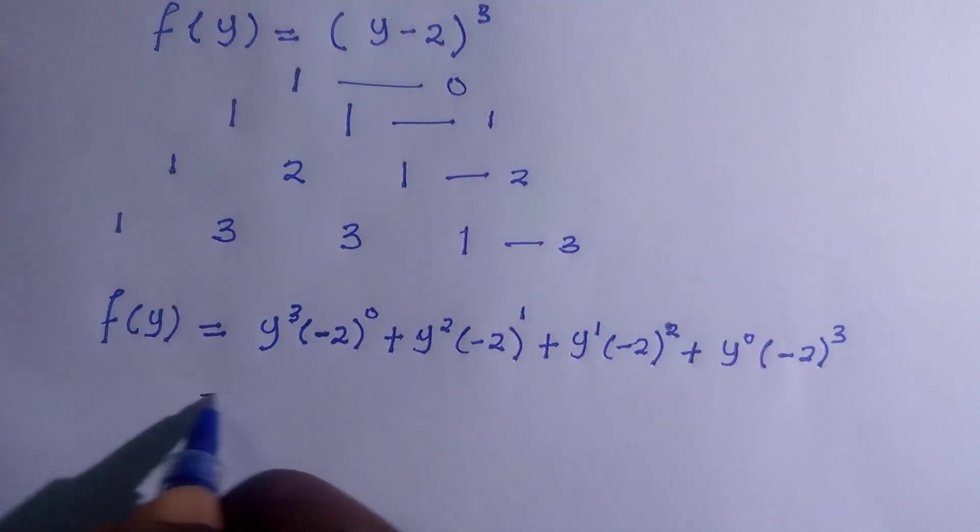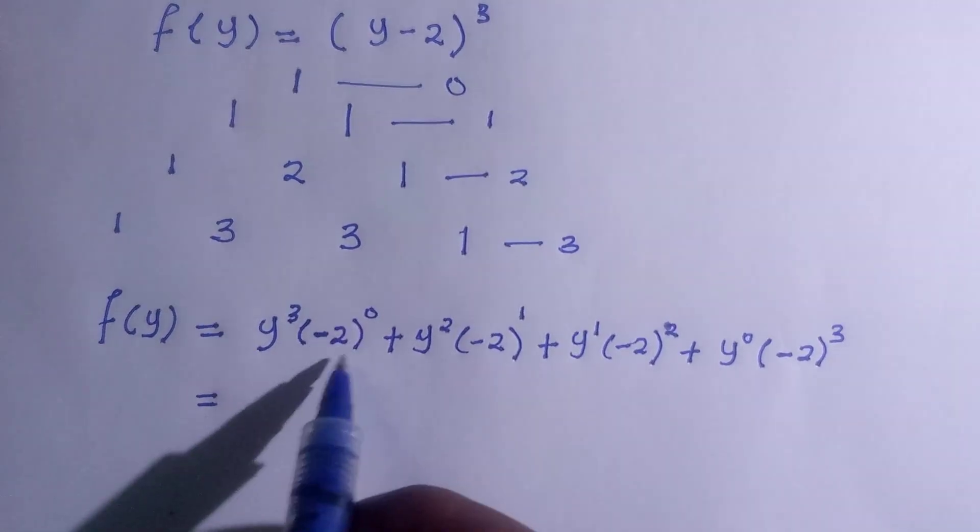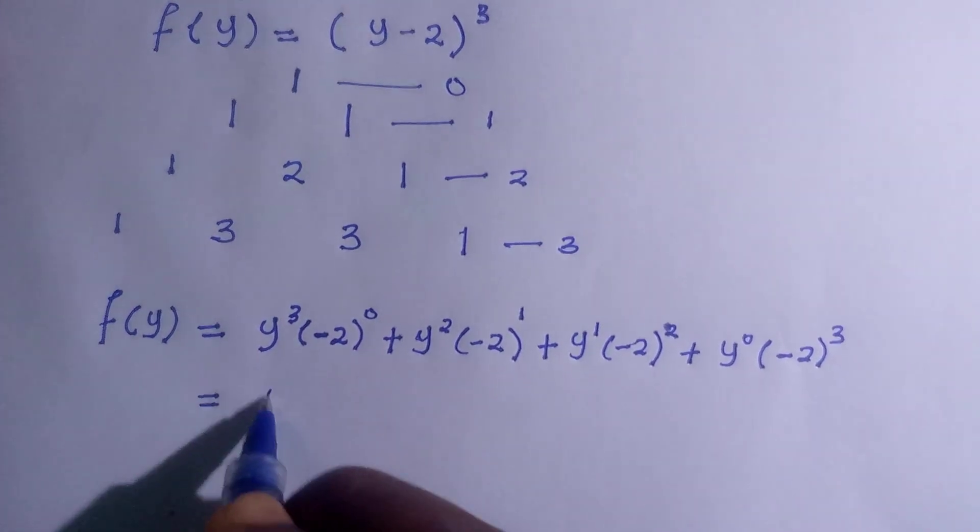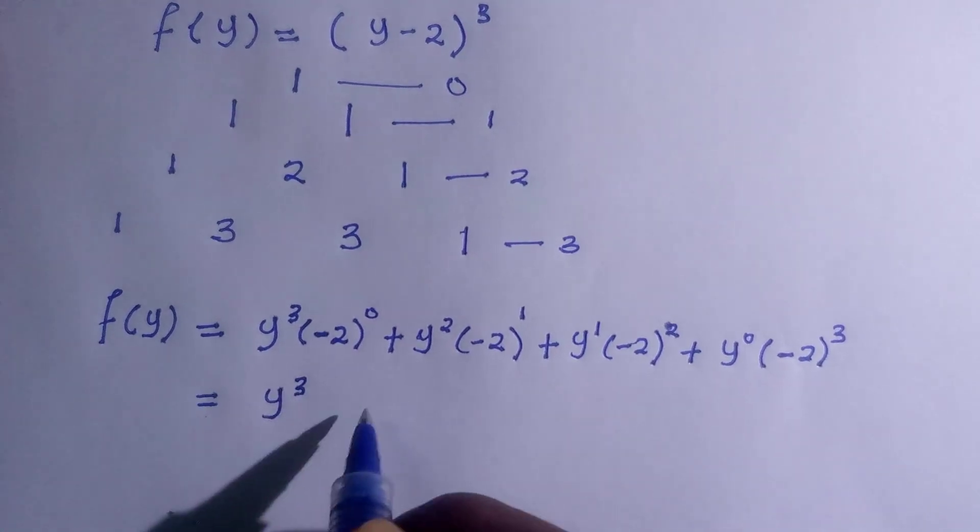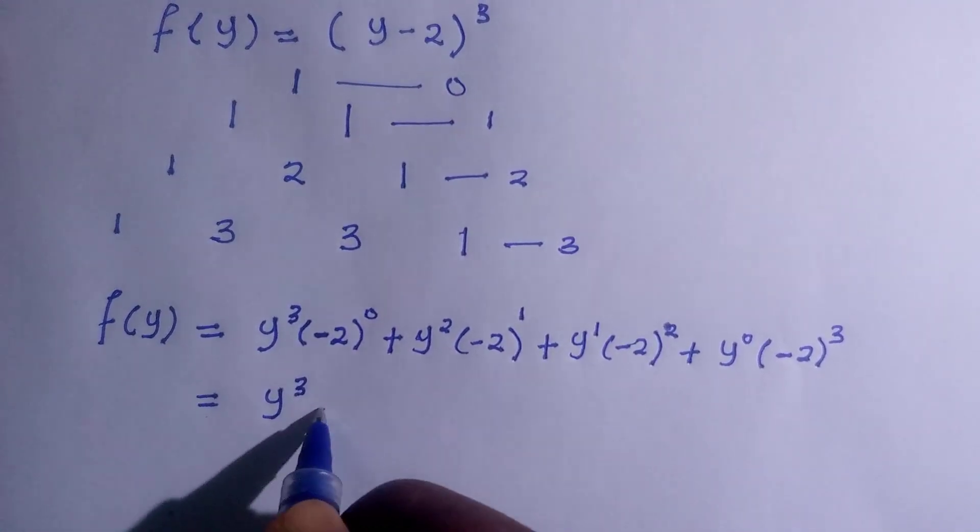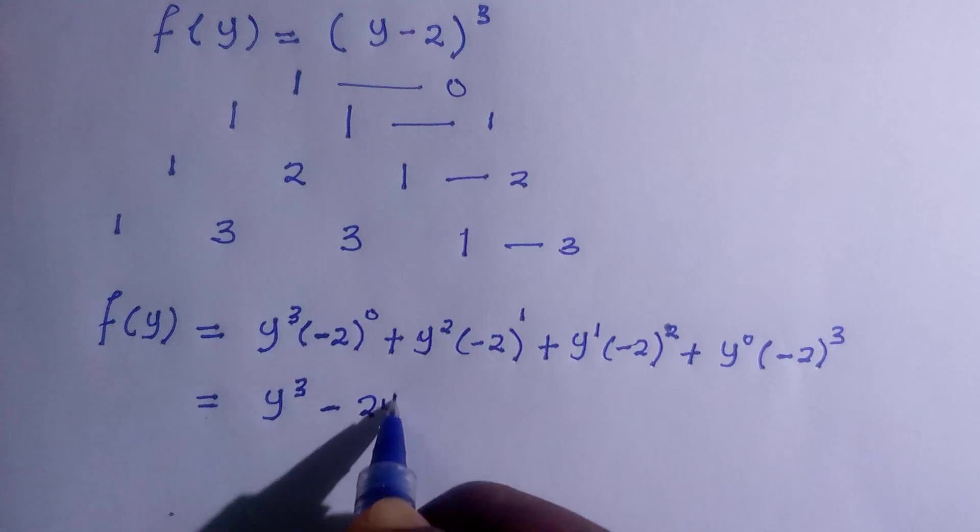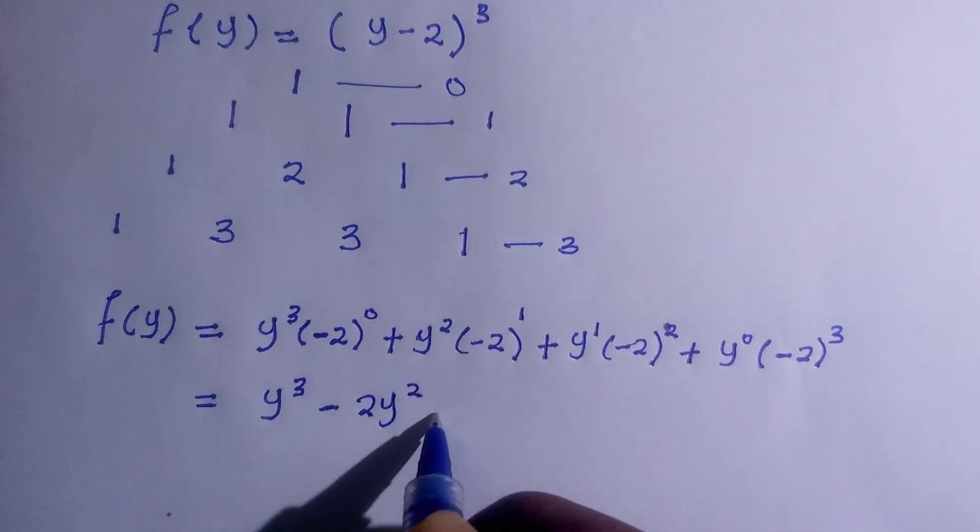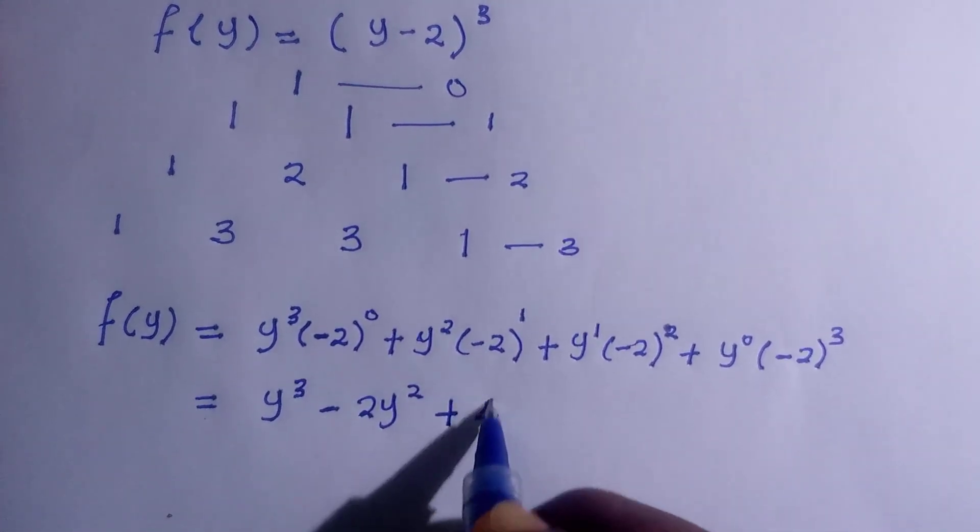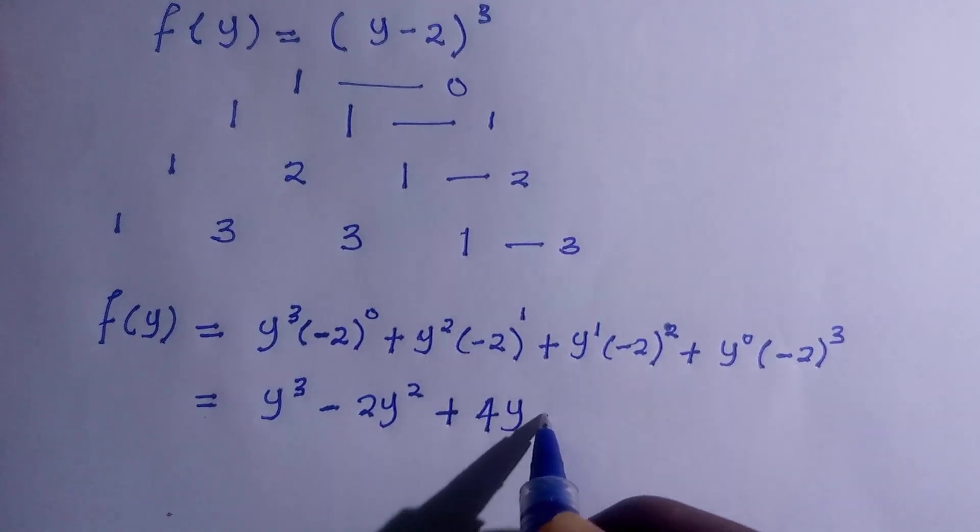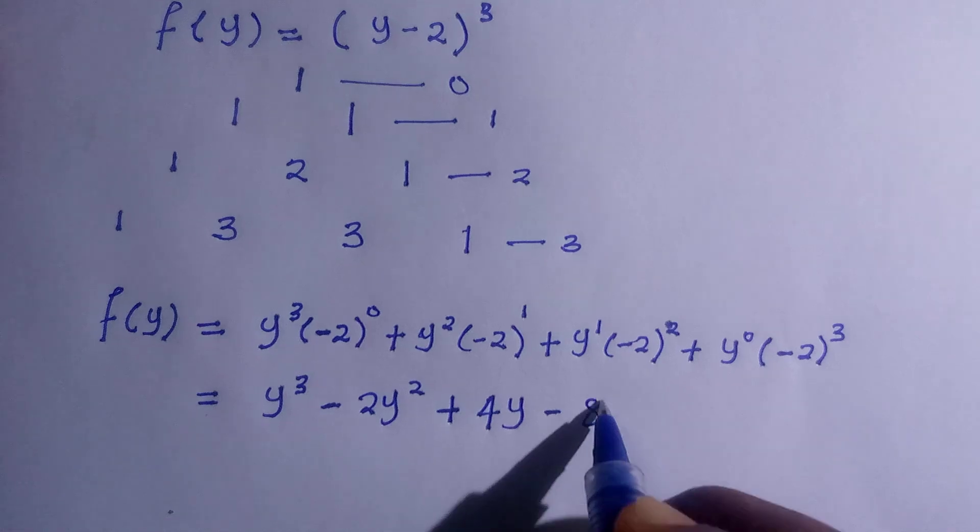If this is what we have, we have this equals, any value to the power of 0 equals 1, then here is y to the power of 3. So the whole of this becomes minus 2y to the power of 2, and here is plus 4y, and here is minus 8.